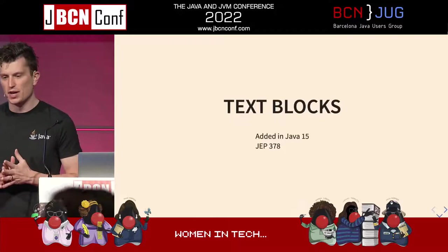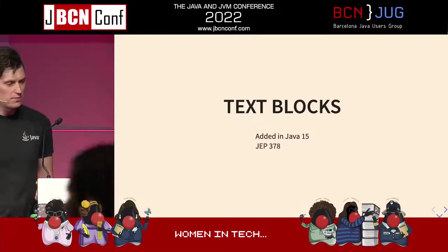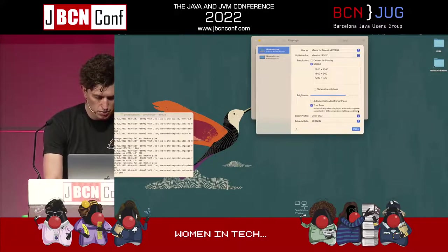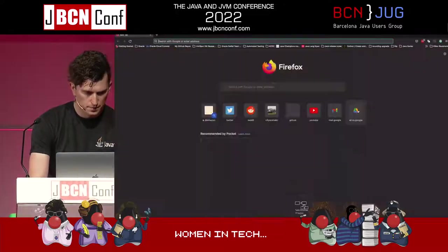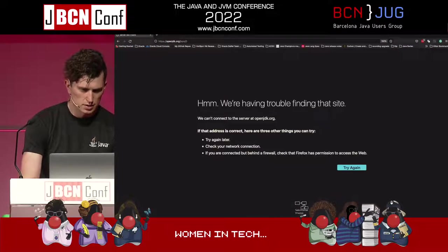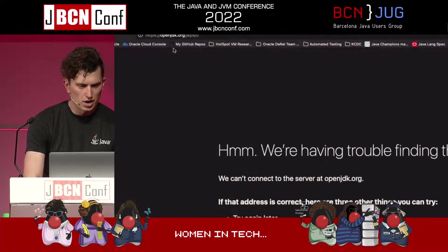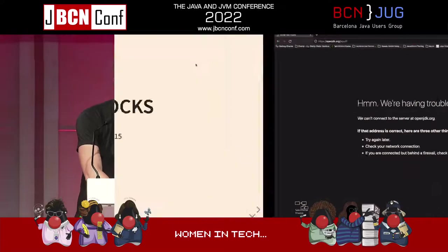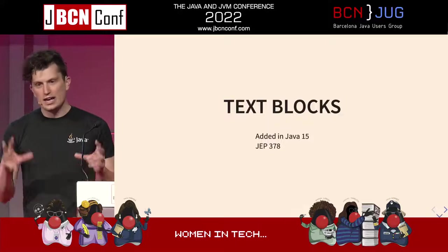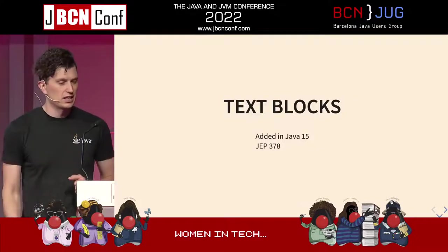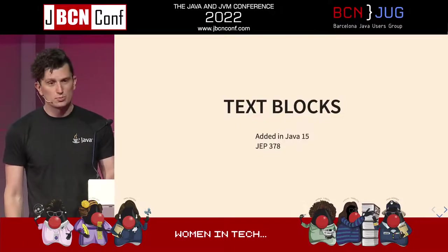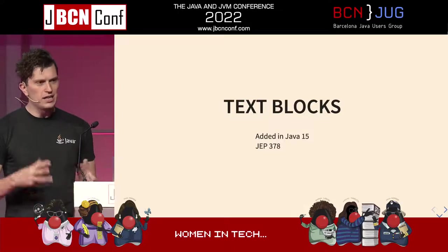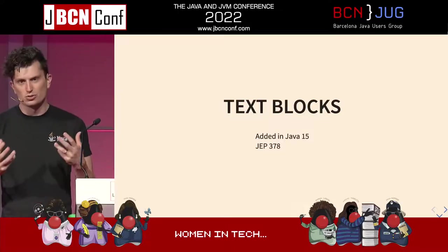The first new language feature I want to cover is text blocks. These were added in Java 15, and the JEP for them is 378. JEP refers to JDK Enhancement Proposal. If you go to openjdk.org, JEPs slash zero, that will give you the full list of all the different JEPs that have been done or proposed. For any substantial change to the JDK, that goes through the JEP process.